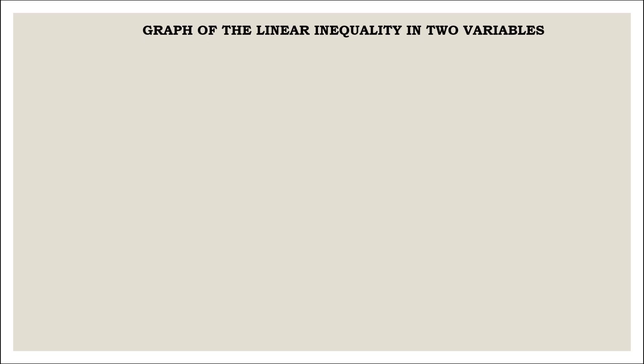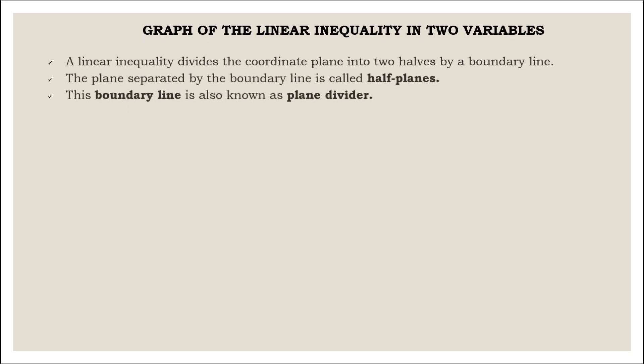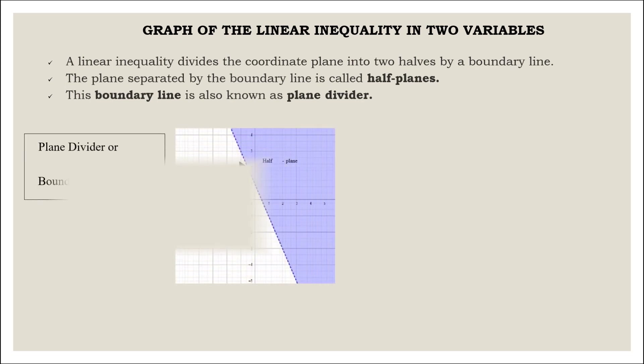The graph of the linear inequality in two variables: a linear inequality divides the coordinate plane into two halves by a boundary line. The plane separated by the boundary line is called half planes. This boundary line is also known as a plane divider.